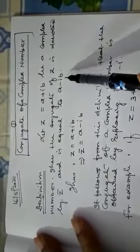What is the Conjugate of a Complex Number? Suppose z is equal to a plus ib, a complex number. Then the conjugate of z is denoted by z bar, and is equal to a minus ib. So the conjugate of a complex number is a complex number in which the connecting sign of the real part and imaginary part is opposite.